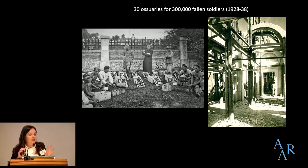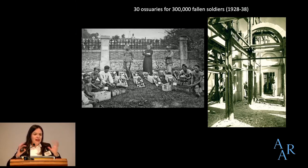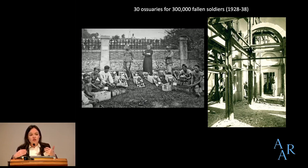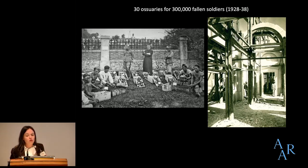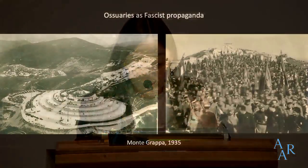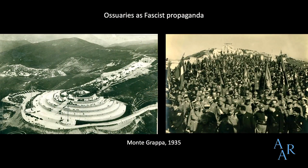This was a massive and expensive campaign, and its objective was primarily political. The ossuaries were meant to foster ideas of nationalism, militarism, but also citizenship. They were built to be sites of pilgrimage — the intention was that Italians would flock to these spaces to venerate the fallen.